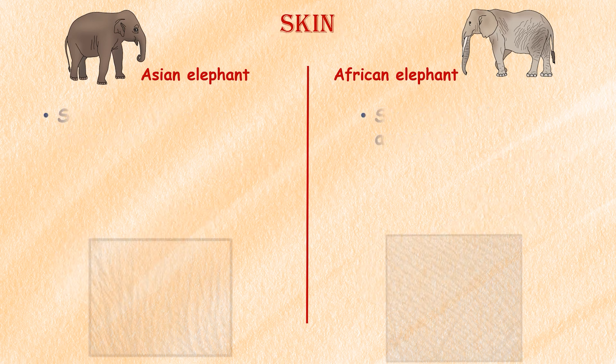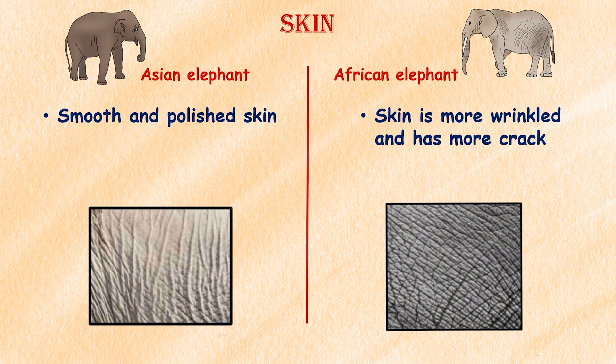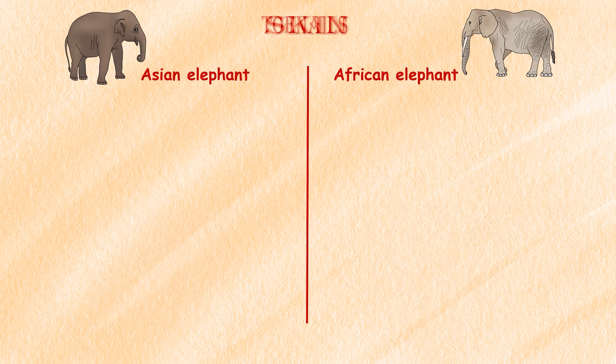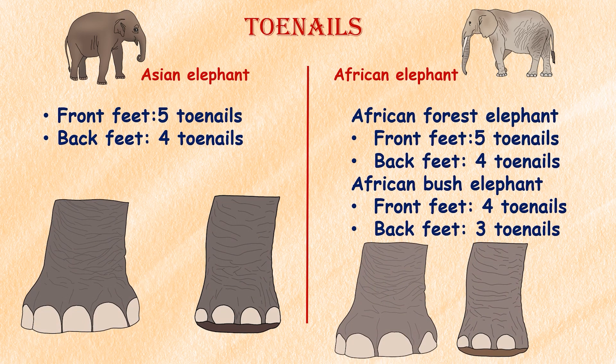Skin: The outer skin of Asian elephants is smooth and polished, whereas African elephants' skin is more wrinkled and has more cracks. Experts say these cracks store water to balance body temperature and prevent dehydration. Toenails: Both the Asian elephant and African forest elephant have five toenails on the front feet and four on the back feet.